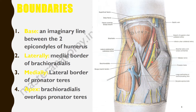Now let's look at what forms the apex. The apex is formed by the union of these two muscles, the brachioradialis and the pronator teres. So we have: the base as an imaginary line, the medial border formed by the lateral side of the pronator teres, the lateral border formed by the medial side of the brachioradialis, and the apex formed by the union of the brachioradialis and the pronator teres.